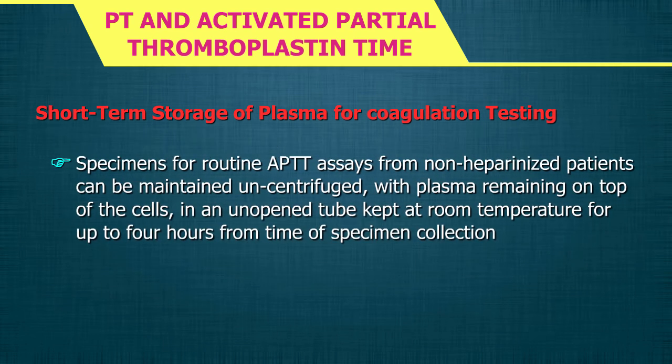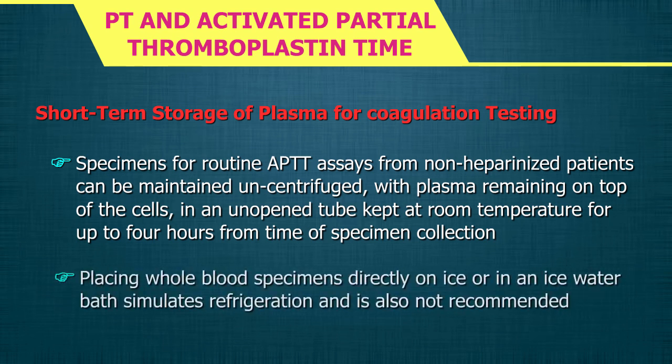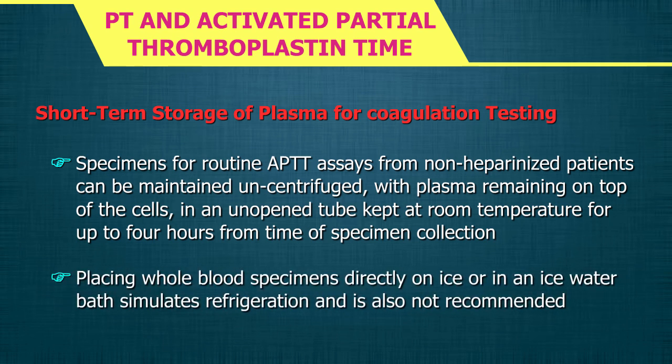Specimens for routine APTT assays from non-heparinized patients can be maintained uncentrifuged with plasma remaining on top of the cells in an unopened tube, kept at room temperature for up to 4 hours from time of specimen collection. Placing whole blood specimens directly on ice or in an ice water bath simulates refrigeration and is also not recommended.